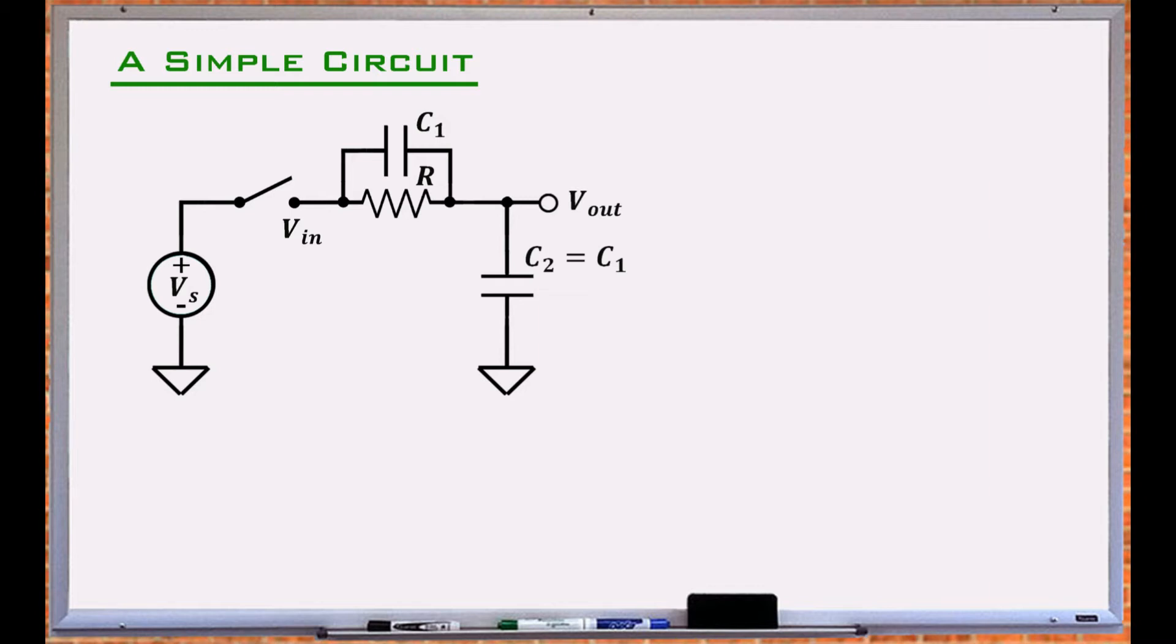Under ideal conditions, typical values, a DC power source, and identical discharged capacitors, what is the shape of the output after the switch is turned on? Before continuing, you may like to pause the video and think about it.